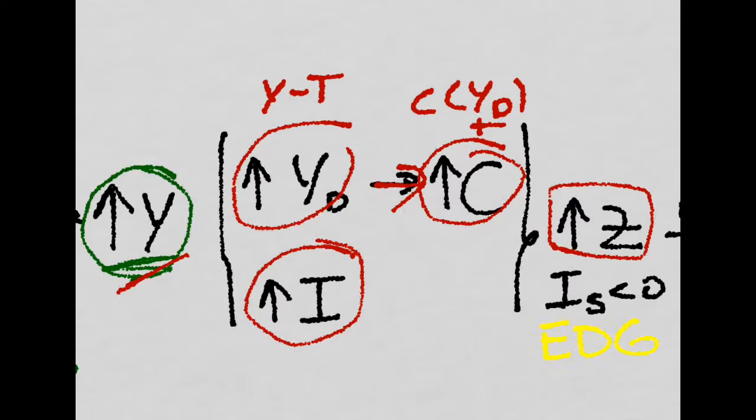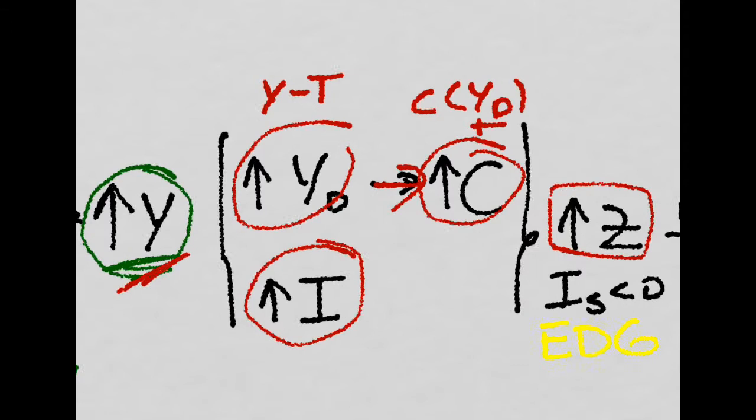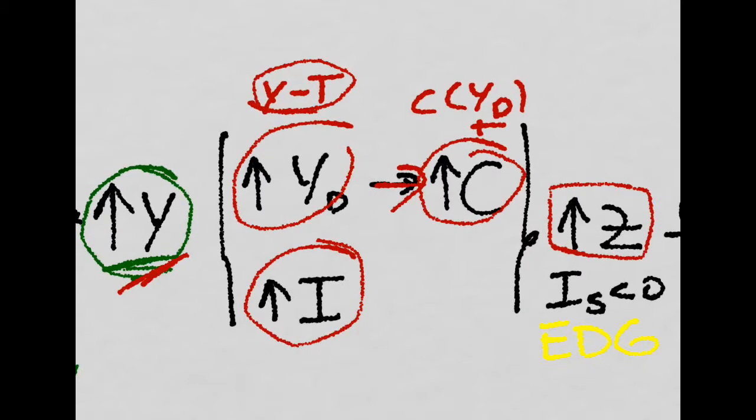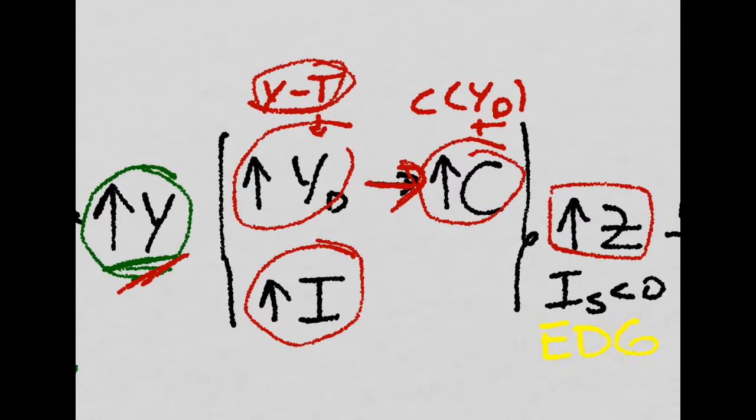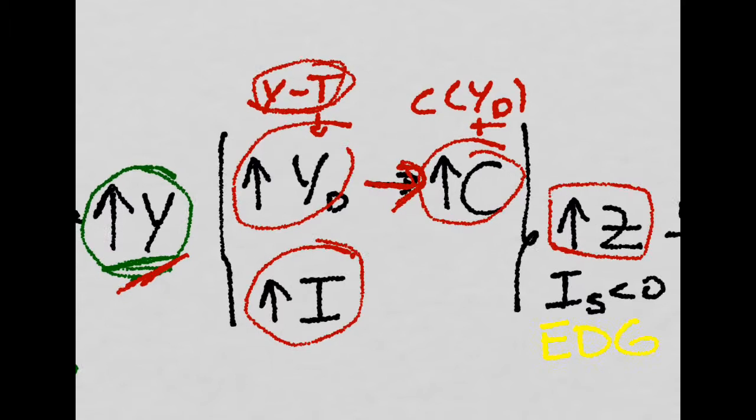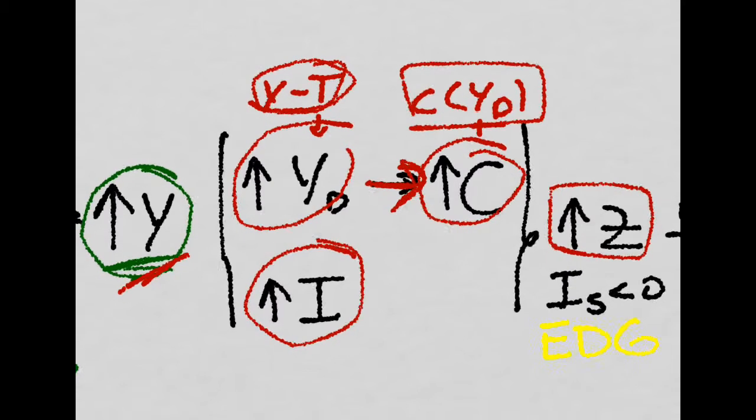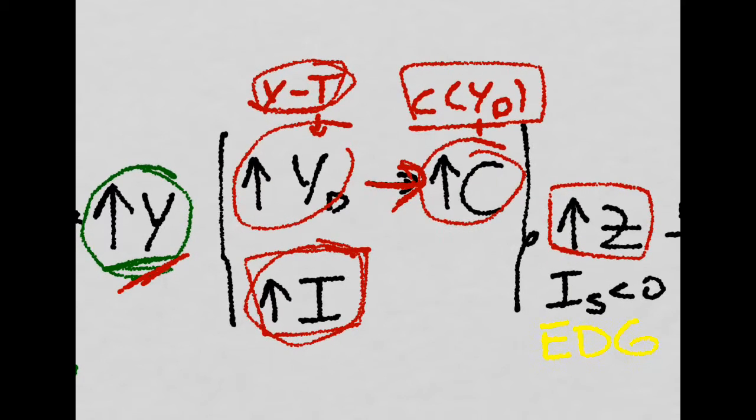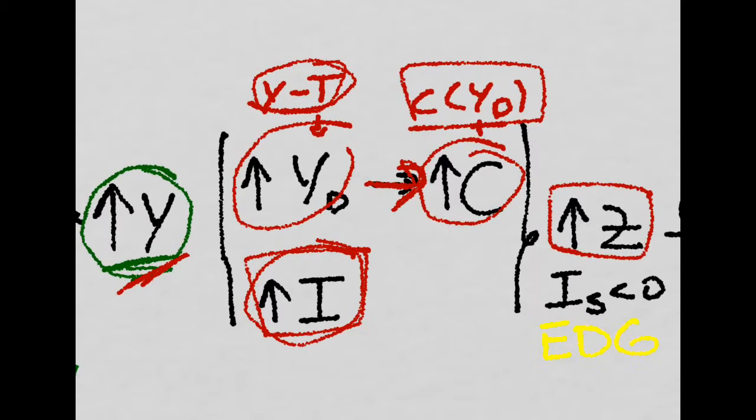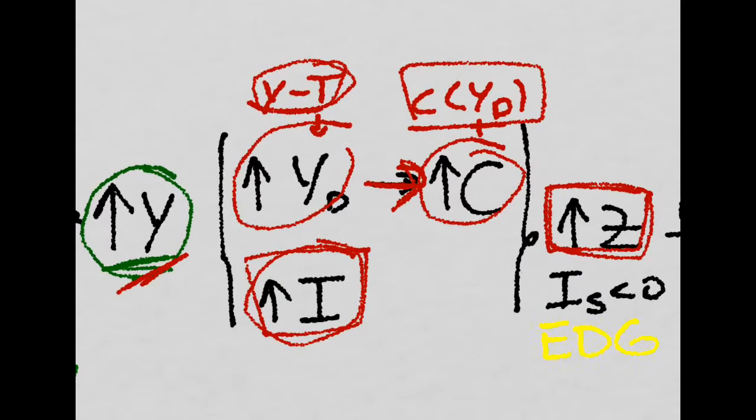But we realize that if we have more income, we have more disposable income. And then we consume more because consumption is just a function of disposable income. And also we invest more. And that all adds up to an increase in aggregate demand for goods.